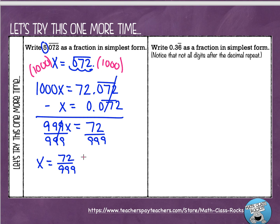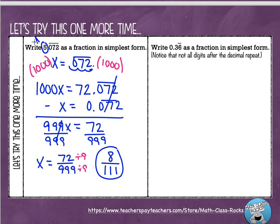Now I want to simplify this. What goes in evenly to both of these? It's going to be 9. 72 divided by 9 equals 8, and 999 divided by 9 equals 111. So that gives me 8 over 111. However, let's not forget about that 5 we circled. I have to bring that 5 down, so it's 5 and 8 over 111. We saved that 5 for the end because there's no point in doing the whole equation with it — it's a whole number, so we just do the decimal part, figure out the fraction, and put the whole number in front at the end. It's just a little shortcut to make our life easier.